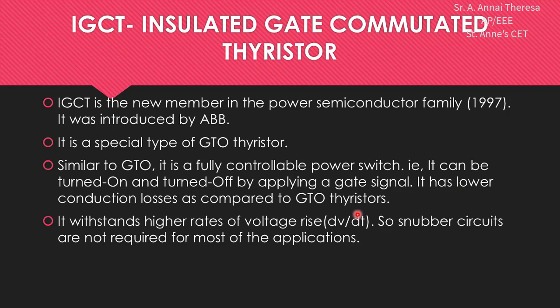It has lower conduction losses as compared to GTO thyristors. It also withstands higher rates of voltage rise, that is dV/dT. So snubber circuits are not required for most applications, because to protect the device from high dV/dT we would normally use snubber circuits. Since IGCT withstands higher voltage rise, snubber circuits are not required.